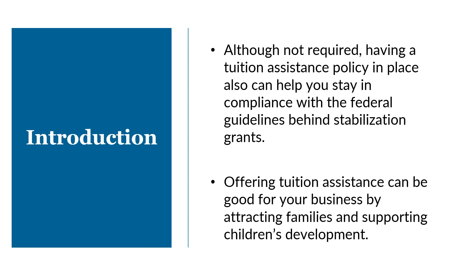Having a tuition assistance policy in place can help you stay in compliance with the federal guidelines behind the child care count stabilization payment program. While offering tuition assistance to families is not a requirement to receive funds, the federal government does require that you at least consider enacting such a policy. The child care count stabilization payment program funds come to the state from the federal government, hence the federal requirement. If you are selected for monitoring by the Wisconsin Department of Children and Families, you'll need to show that you at least considered enacting a tuition assistance policy. You will not be penalized for not offering financial support as long as you can explain why you opted not to enact a policy.